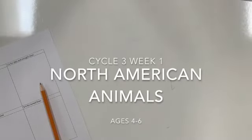This video is for cycle 3 week 1 ages 4 to 6 and we will be drawing animal tracks which are simple shapes that correspond to the idea of Lewis and Clark's adventure through the Louisiana Purchase and some of the animals they would have seen on their journey.